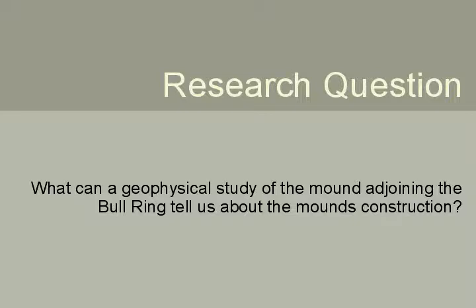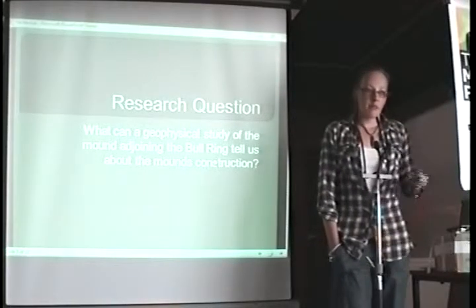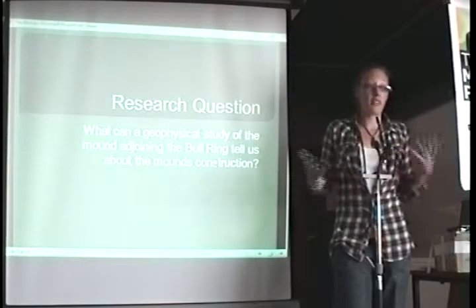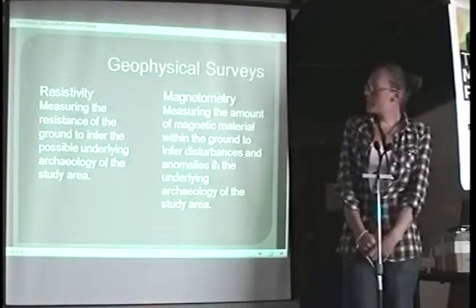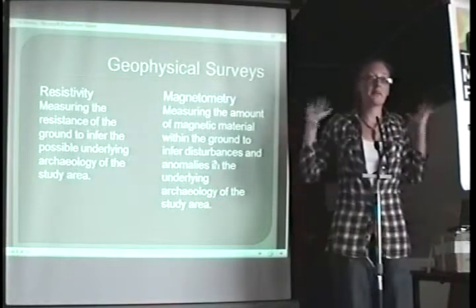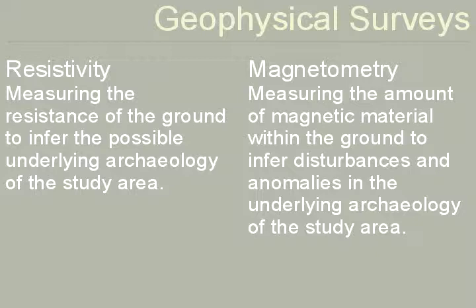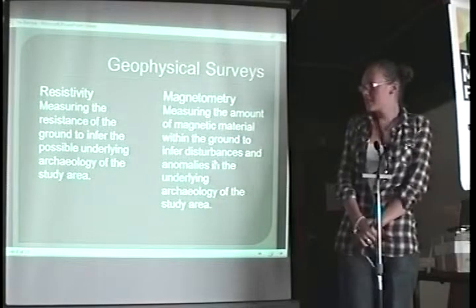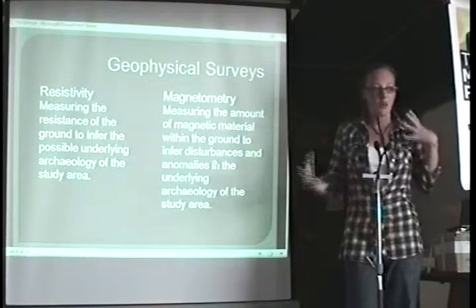So my research question and the question that I put forward before I did the geophysical study was what can a geophysical study of the mound adjoining the bullring tell us about the mound's construction? The aim of that was to see whether it is two barrows, one superimposed onto the other or if it is a single barrow or if it is either. Geophysical studies are a non-intrusive survey. They have two main types of geophysical study, one of which is resistivity and the other one is magnetometry. The differences between the two, with resistivity it measures the resistance of the surrounding ground and the soil. The more compact it is, which you tend to get with banks and ditches, the higher the resistance. With magnetometry it measures the amount of magnetic activity within the ground.